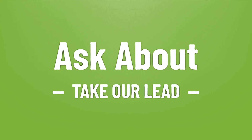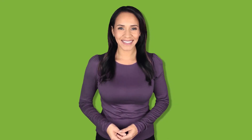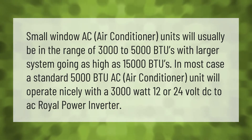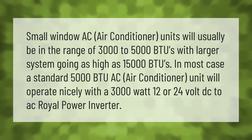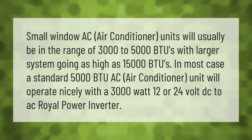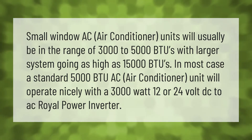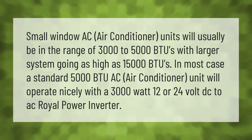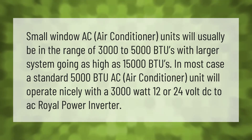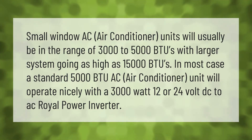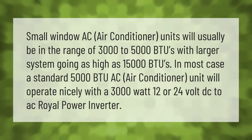Take our lead — let's help you make your mark. Small window AC air conditioner units will usually be in the range of 3000 to 5000 BTUs, with larger systems going as high as 15,000 BTUs. In most cases, a standard 5000 BTU AC unit will operate nicely with a 3000-watt 12 or 24 volt DC to AC royal power inverter.